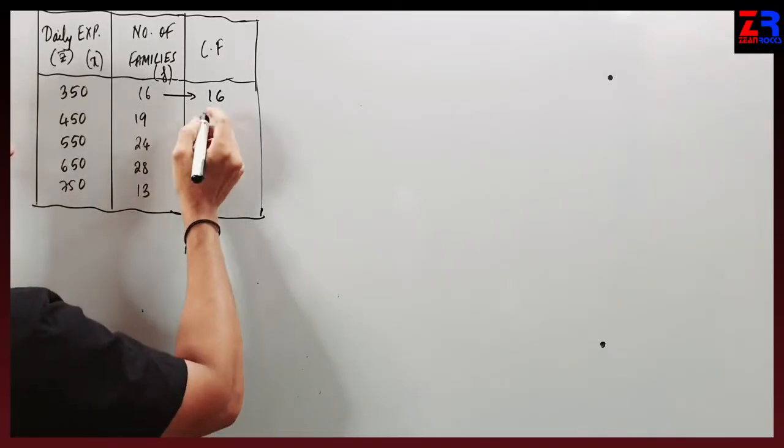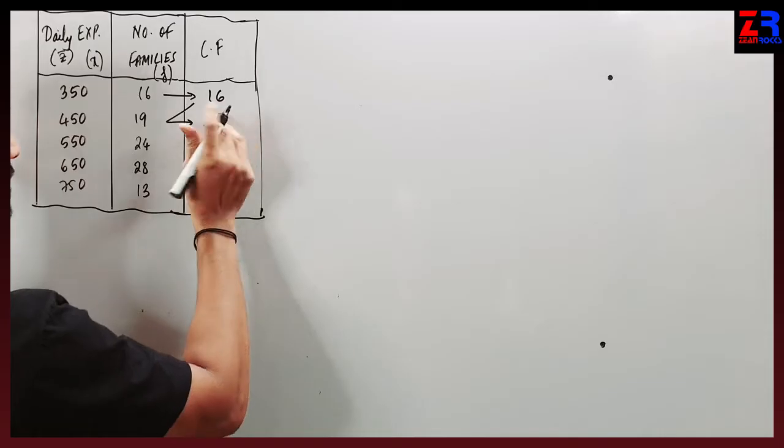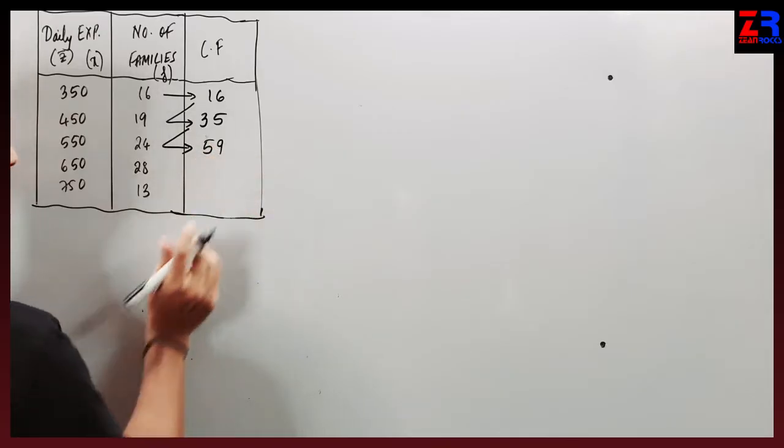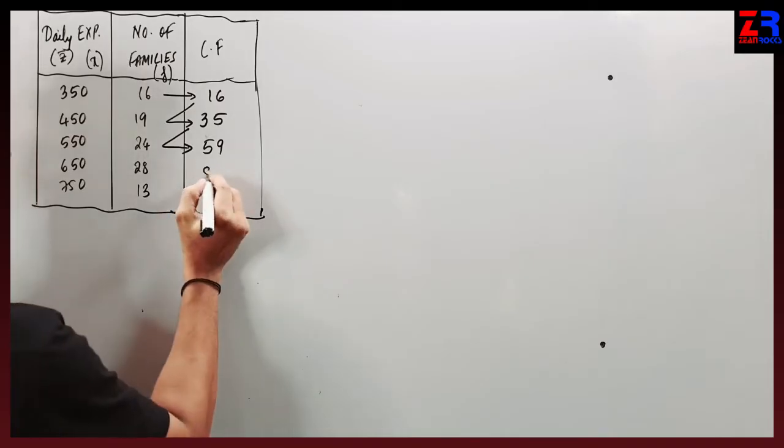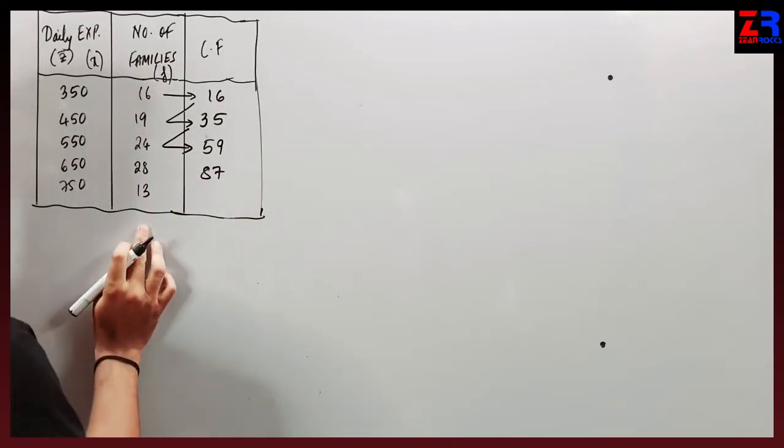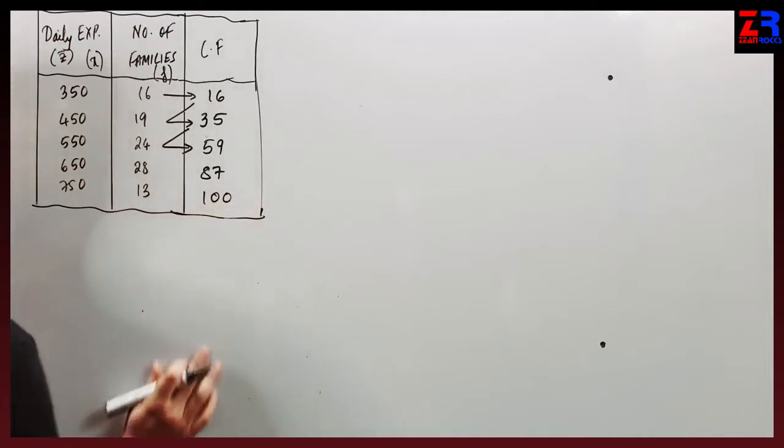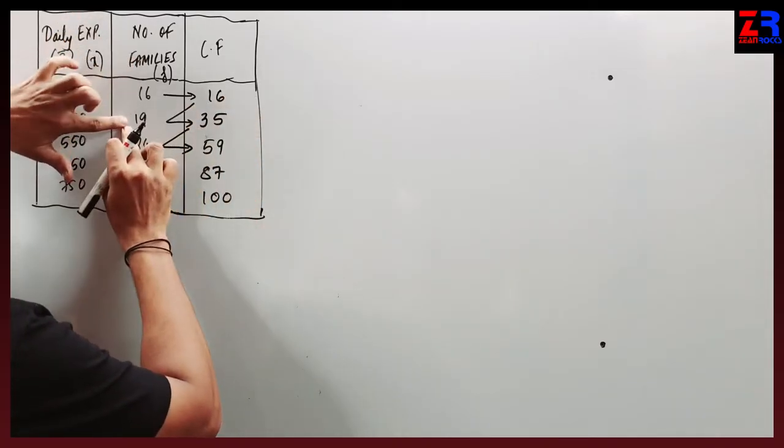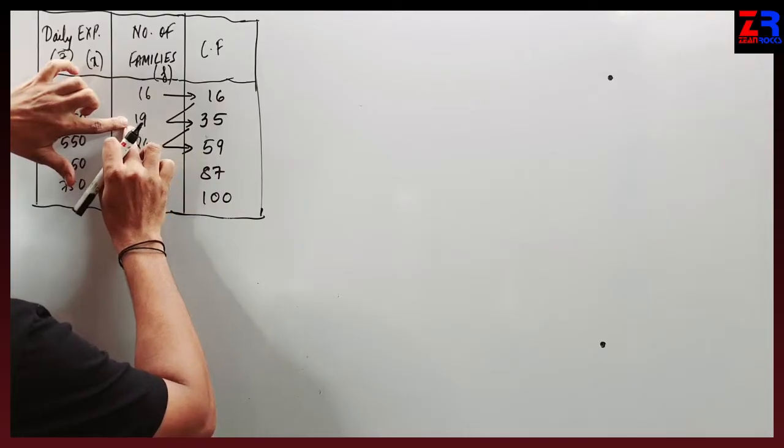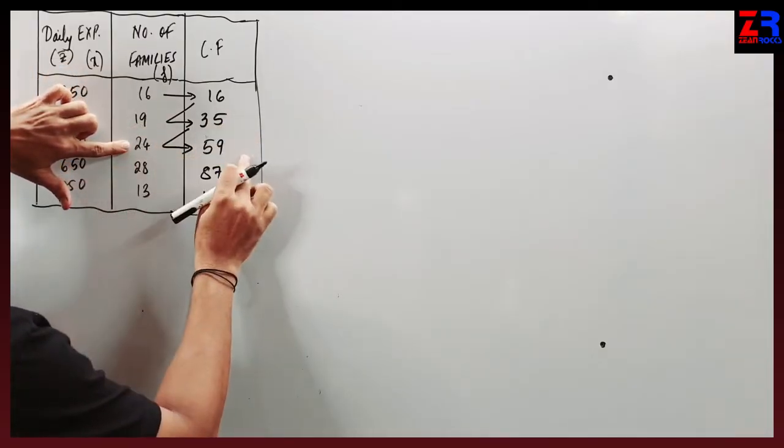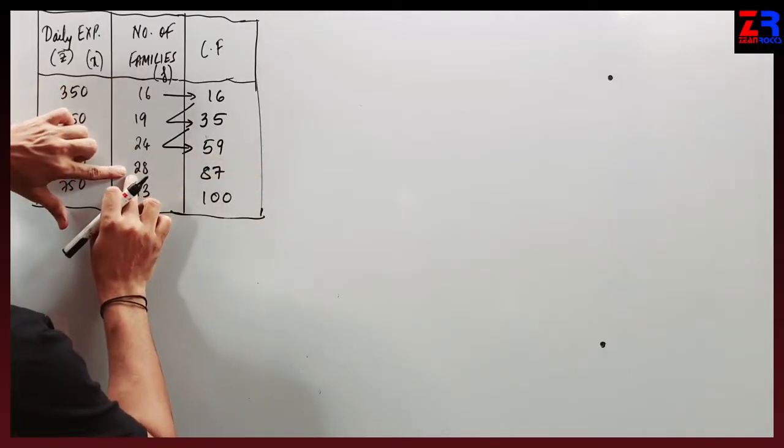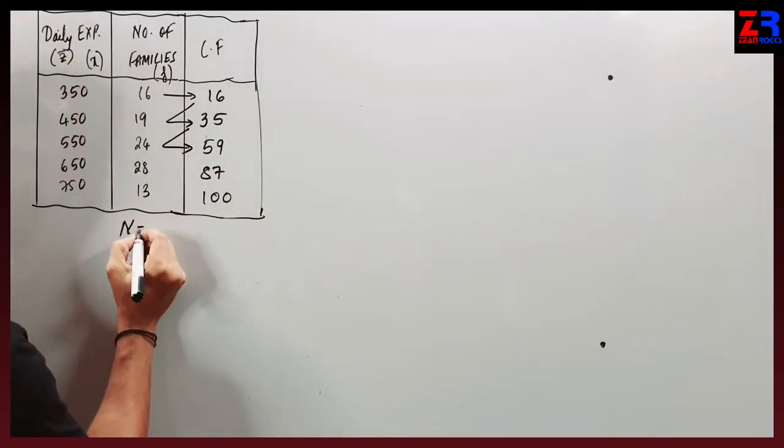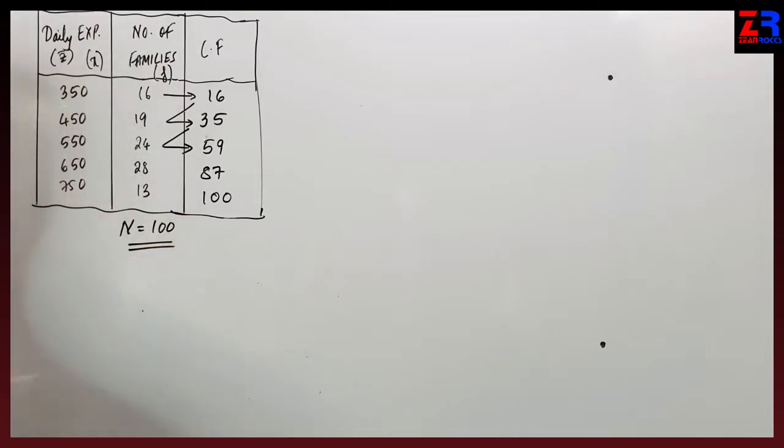Creating the cumulative frequency column: 16 plus 19 is 35, 35 plus 24 is 59, 59 plus 28 is 87, 87 plus 13 is 100. So the value of N is equal to 100.